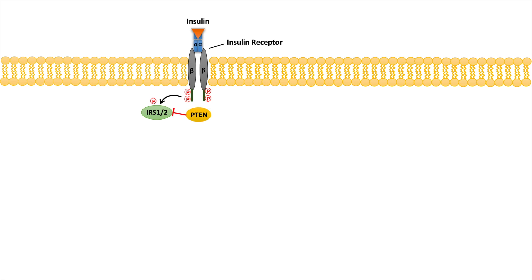This step in the pathway is actually inhibited by PTEN. PTEN will actually dephosphorylate IRS one and two.